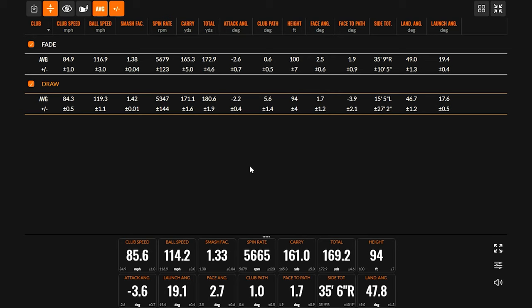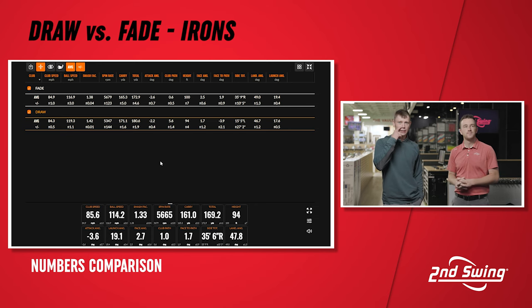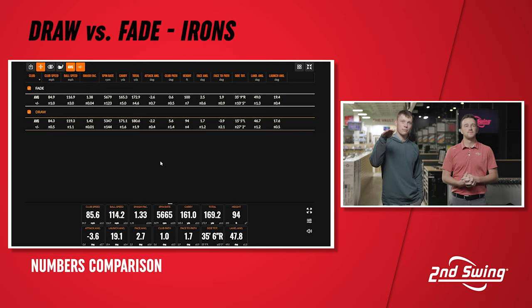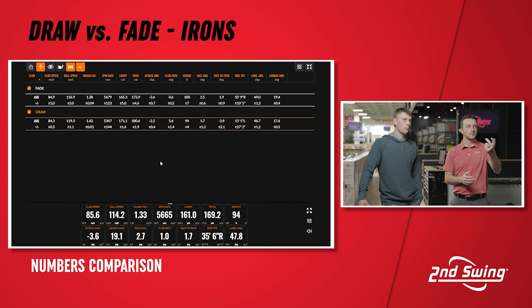I would say the biggest thing that jumps out to me right away is just stopping power. First metrics I noticed — spin. We're definitely seeing a little bit of a difference there where draws are just under 5,400 RPM and fades we're seeing closer to that 5,800 range. Definitely a higher ceiling on that fade shot as well. From a height perspective, we saw more height from a fade compared to that draw. Landing angles with that fade, we saw up at 49 degrees. Draws were coming in a little bit flatter, around 46 degrees — just less stopping power with that draw compared to the fade.